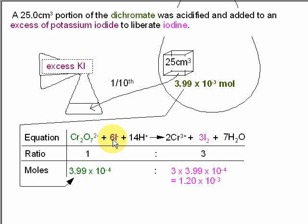What's important about this equation is that there's a 1 to 3 ratio between the dichromate and the iodine formed. So we can work out the amount of iodine formed is 3 times the amount of dichromate that there was: 1.20 times 10 to the minus 3.